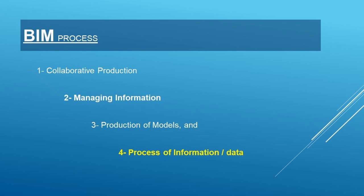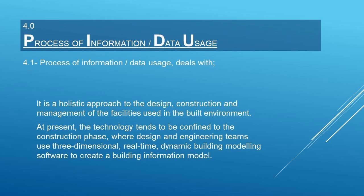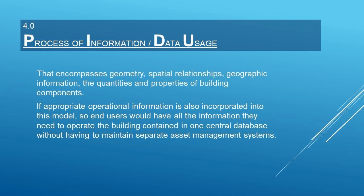Next in BIM processes is the process of information usage or data usage. It is a holistic approach to the design, construction, and management of the facilities used in the built environment. Technology tends to be used in the construction phase, where design and engineering teams use three-dimensional, real-time, dynamic building modeling software to create a building information model that encompasses geometry, spatial relationships, geographic information, and the quantities and properties of building components. If appropriate, operational information is also incorporated so end users have all the information they need to operate the building, contained in one central database without having to maintain separate asset management systems.